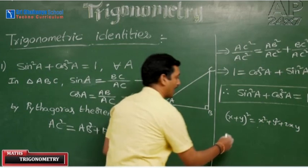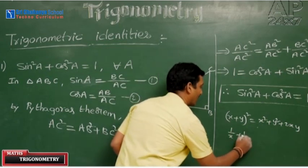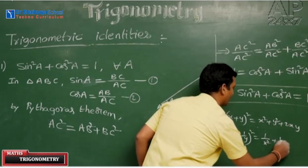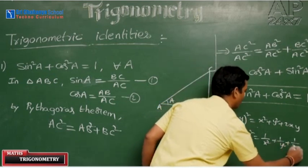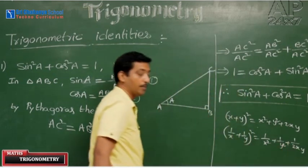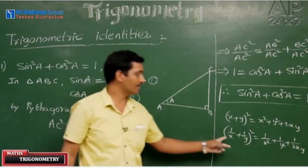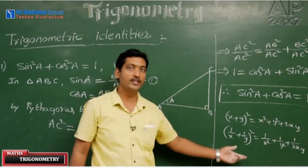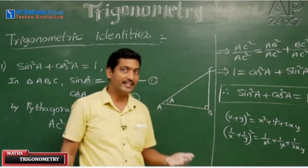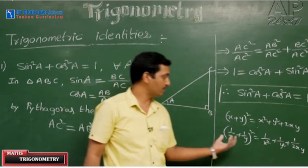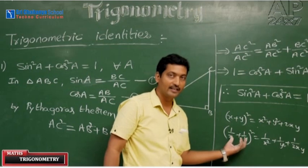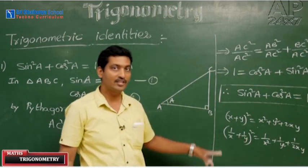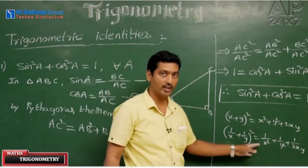This is also an identity: (1/x + 1/y)² = 1/x² + 1/y² + 2/(xy). For x = 0 or y = 0, it is undefined. Such values need not be substituted. For the values of x and y for which the equation is defined, we just need to check whether it is true or not to say the given equation is an identity.